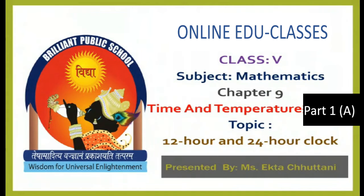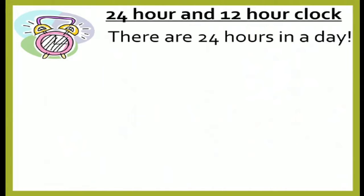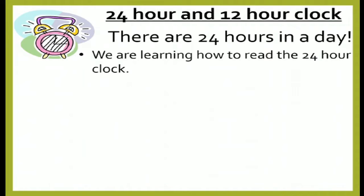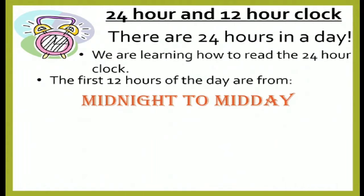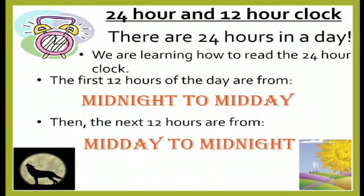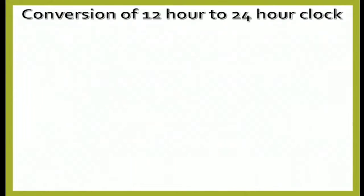Welcome to online classes, children. Today in chapter number 9, that is Time and Temperature, we are going to discuss 12-hour and 24-hour clock. As you all know, there are 24 hours in a day. The first 12 hours are from midnight to midday, that is 12 midnight to 12 noon, and the next 12 hours are from 12 noon to 12 midnight. Now let's see how to convert 12-hour clock to 24-hour clock.